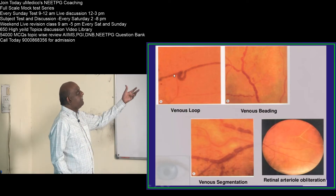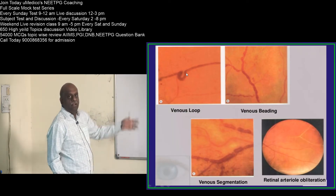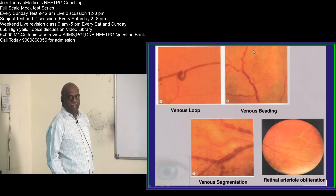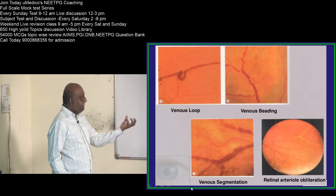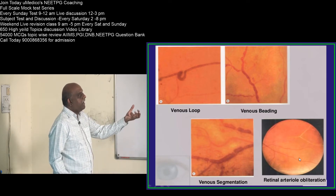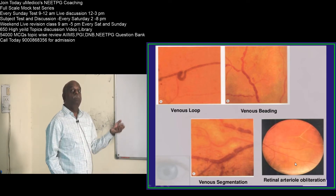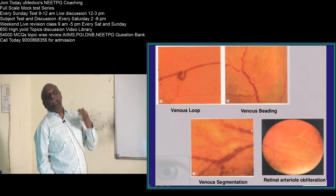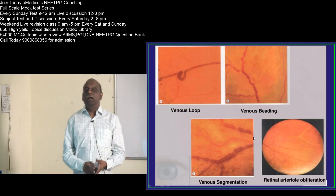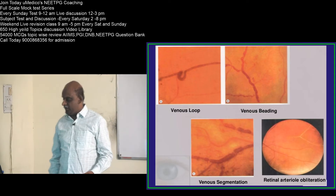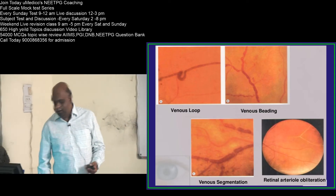Later on there is venous looping, venous beading, venous segmentation, and retinal arterial obliteration. These are the finer details of diabetic retinopathy changes which you have to be doubly sure about.